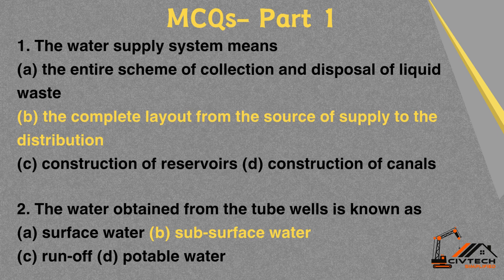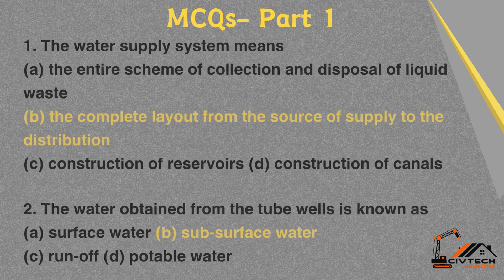MCQ 2: The water obtained from tube wells is known as — A. Surface water. B. Sub-surface water. C. Run-off. D. Potable water. Correct option: B. Sub-surface water.